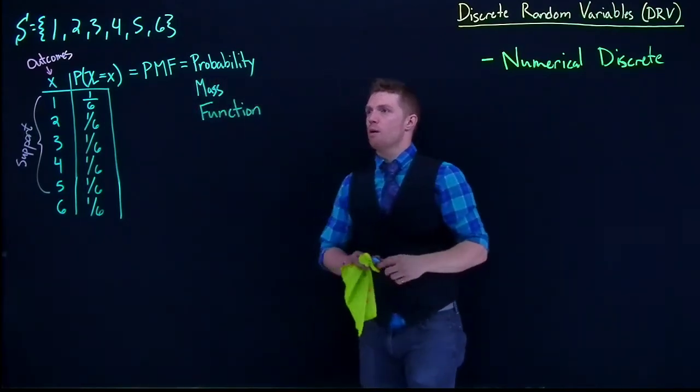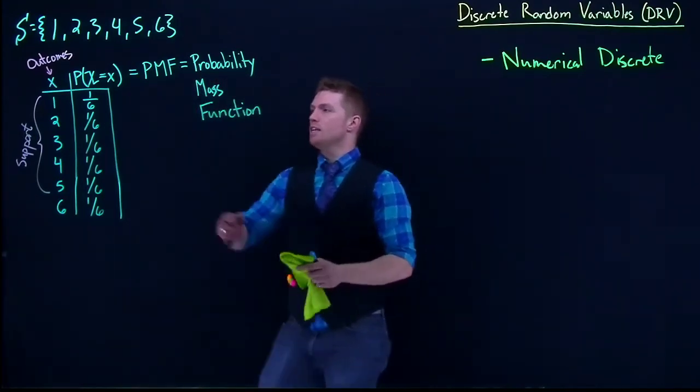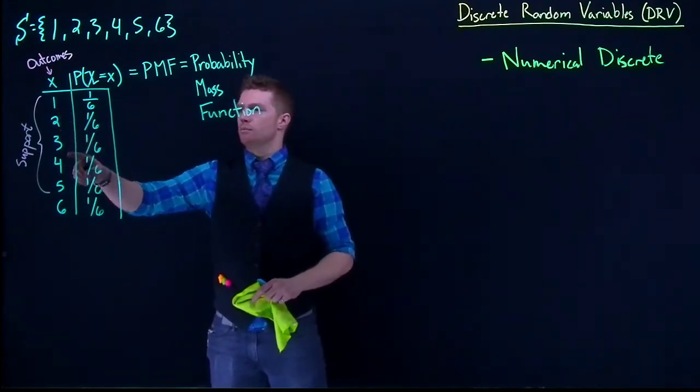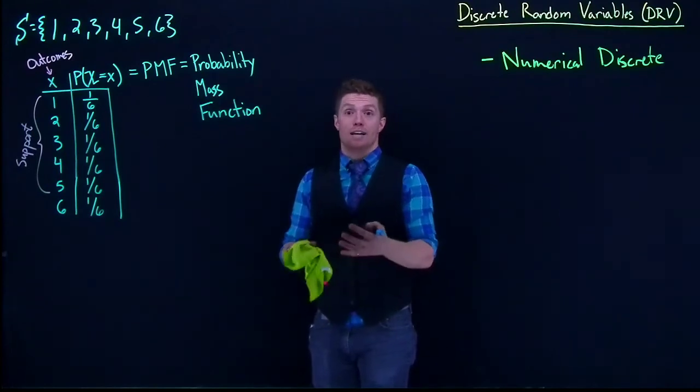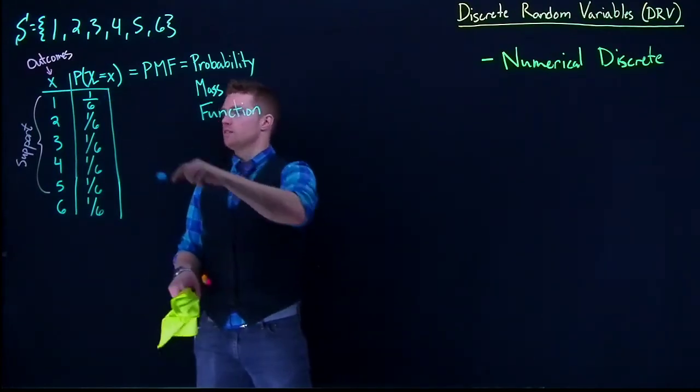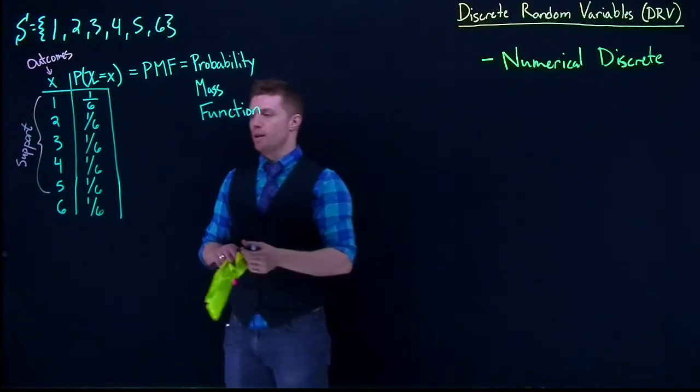It's called the Probability Mass Function because each of these particular outcomes have some probability mass to them. They each are possible to happen. We see that the 1 is 1/6, the next one is 1/6, all the way down.